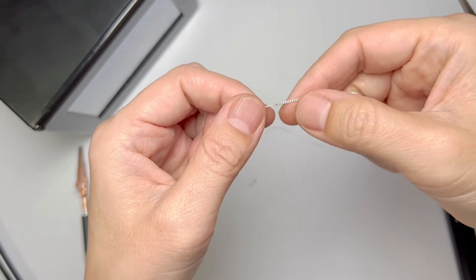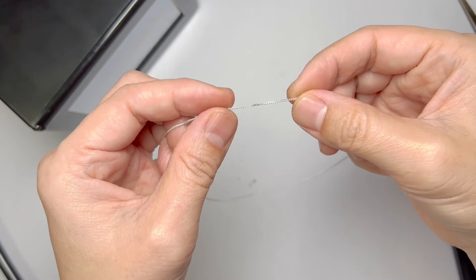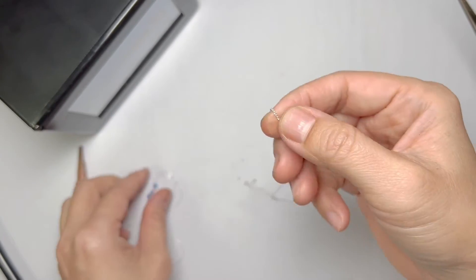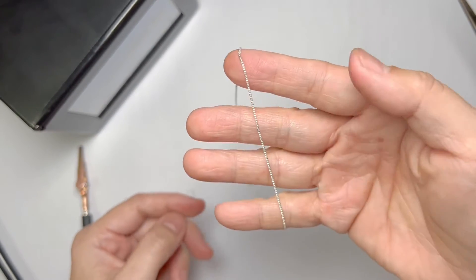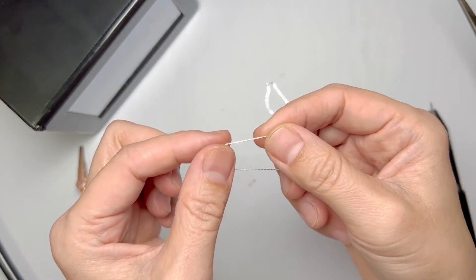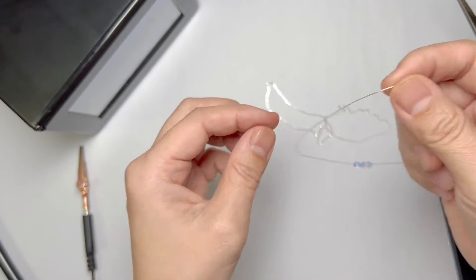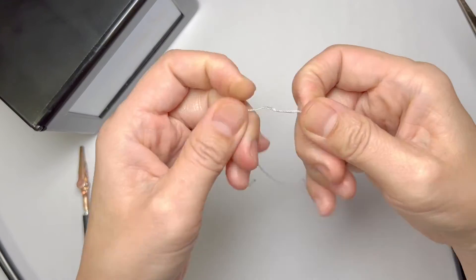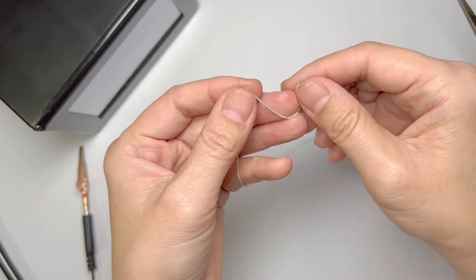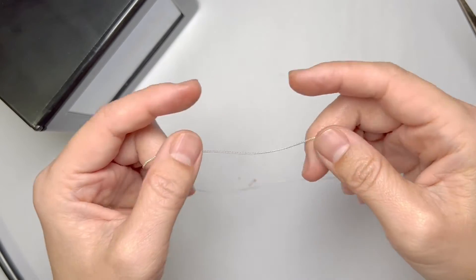I want to show you how to weld this tiny curb chain using the Orion micro welder. In fact, this is harder to do than this chain because this chain is somewhat stiff and it stands out already. This one, on the other hand, because of the fine links it drapes and it's a little bit harder to weld, but I'm going to show you how I did this.